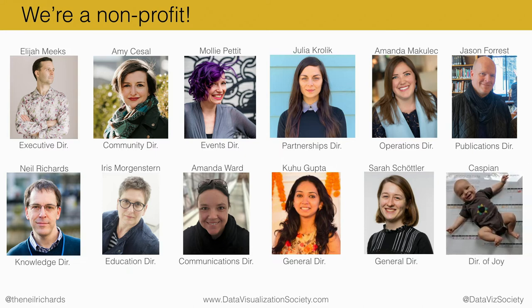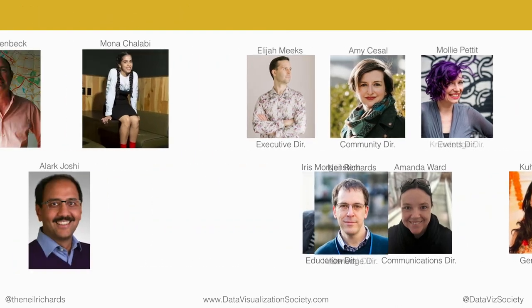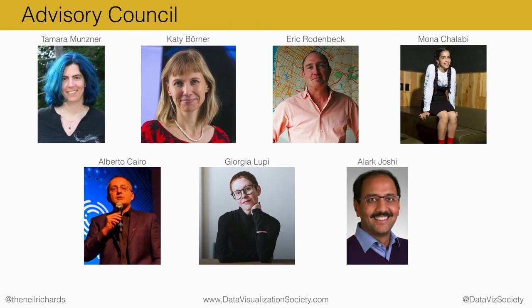To make it up to twelve, we have an official director of joy — that's Caspian. We also have an advisory council with some pretty famous names: Georgia Lupi, Mona Chalabi, Alberto Cairo — seven people who are our advisory council. They help us out with judging our competitions and providing input into the board as well.